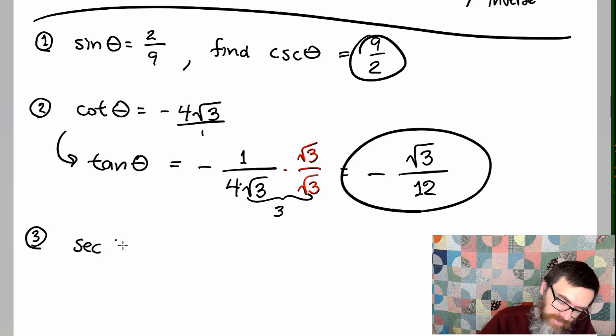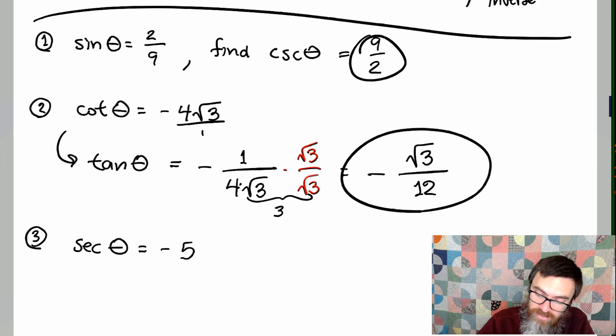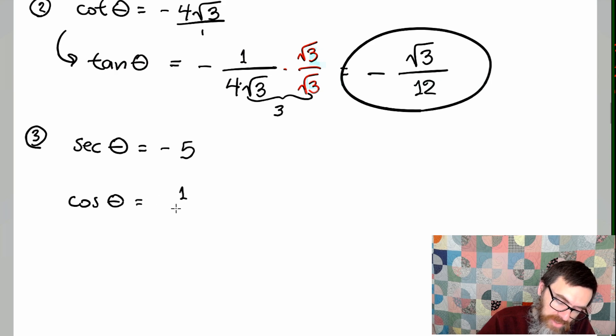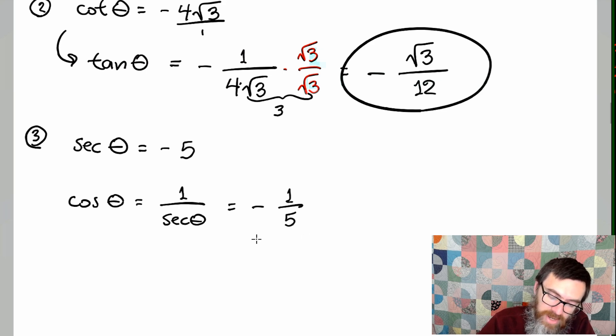So then this last one, we have the secant of theta is equal to negative 5. If that's the case, what's cosine? Well again, since cosine is the reciprocal of secant, this is just going to be the reciprocal of negative 5, which is negative one-fifth. That's all there is to it.